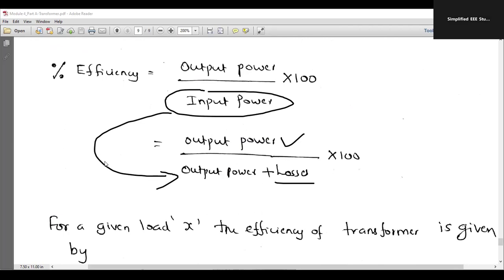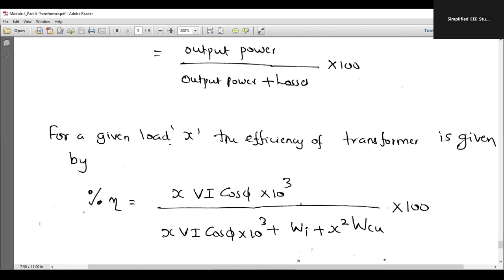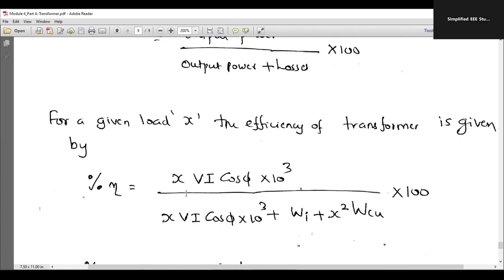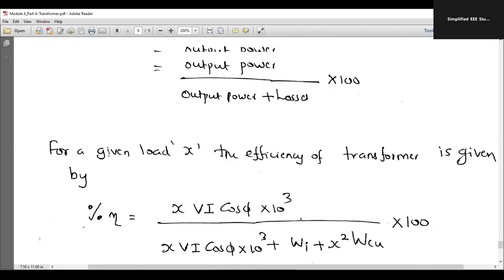So moving further, as I already told you that the transformer efficiency will be depending on the load also, load and power factor. By the way, the equation can be directly modified in this particular fashion. Percentage efficiency is written as output power. What is output power? It is a real power. That means VI cos phi into 10 to the power 3 and you have to consider the fraction of loading which is called x.